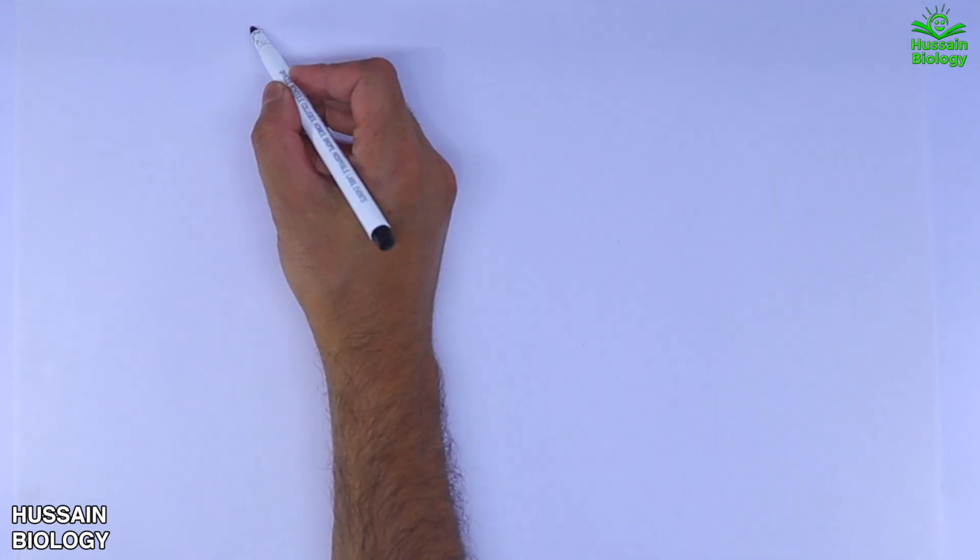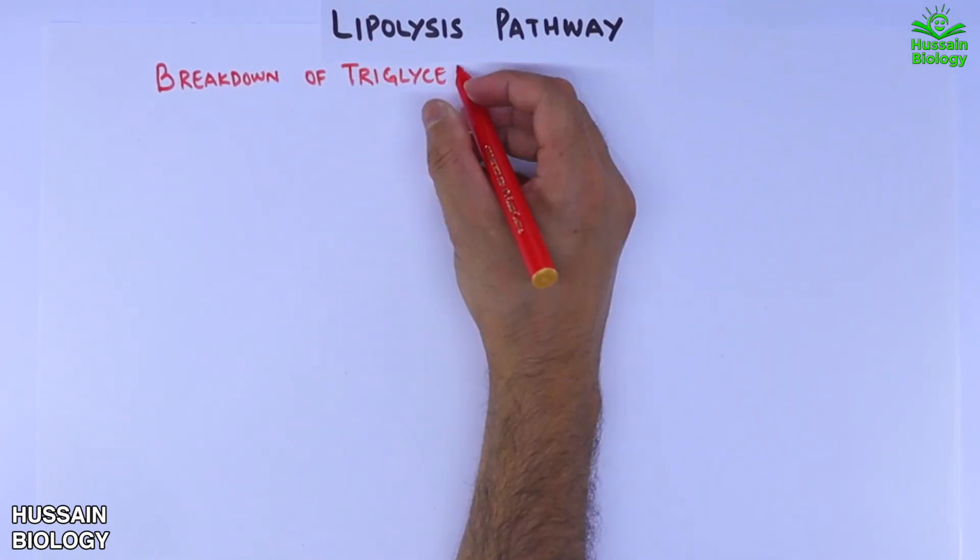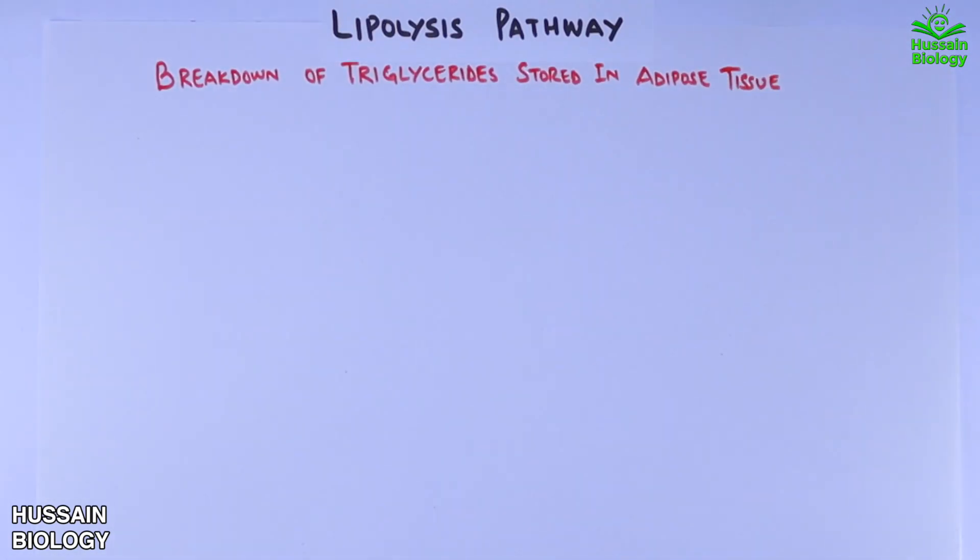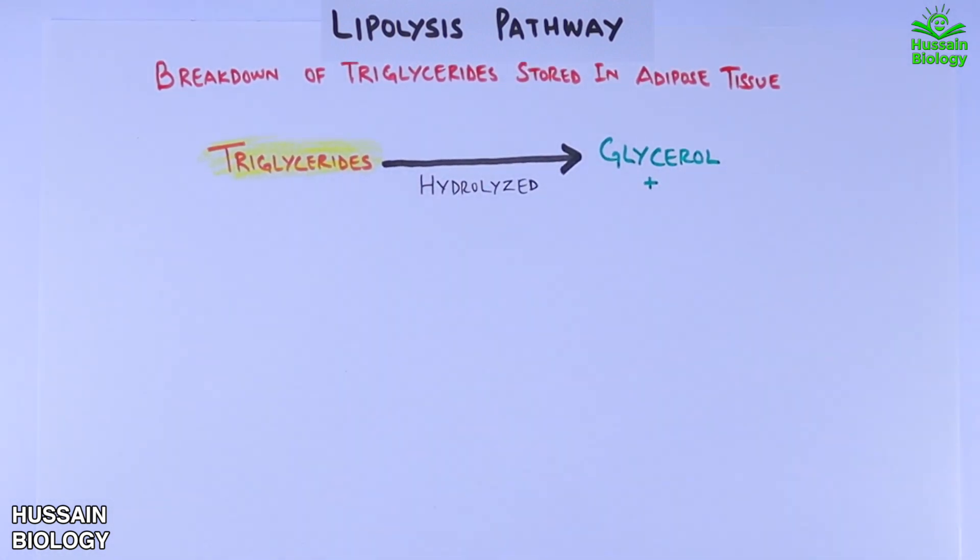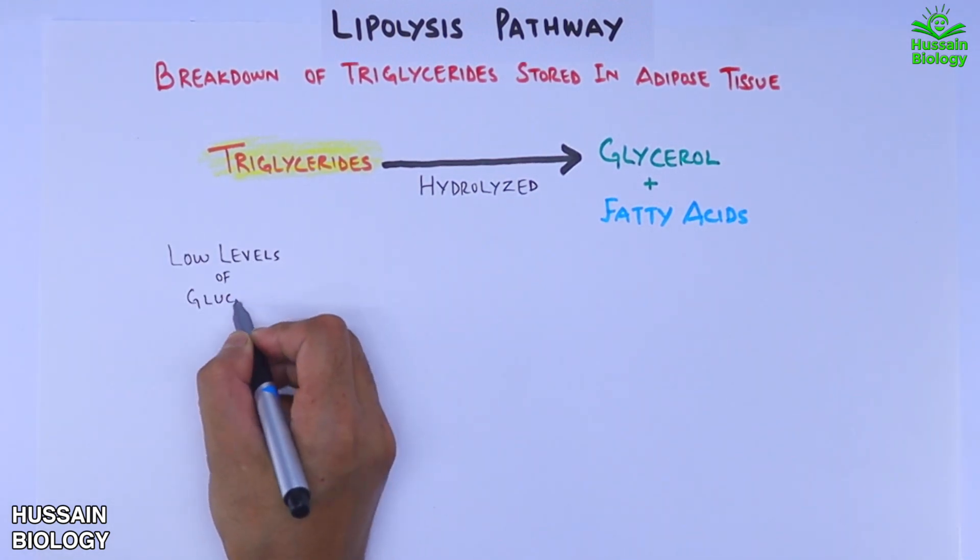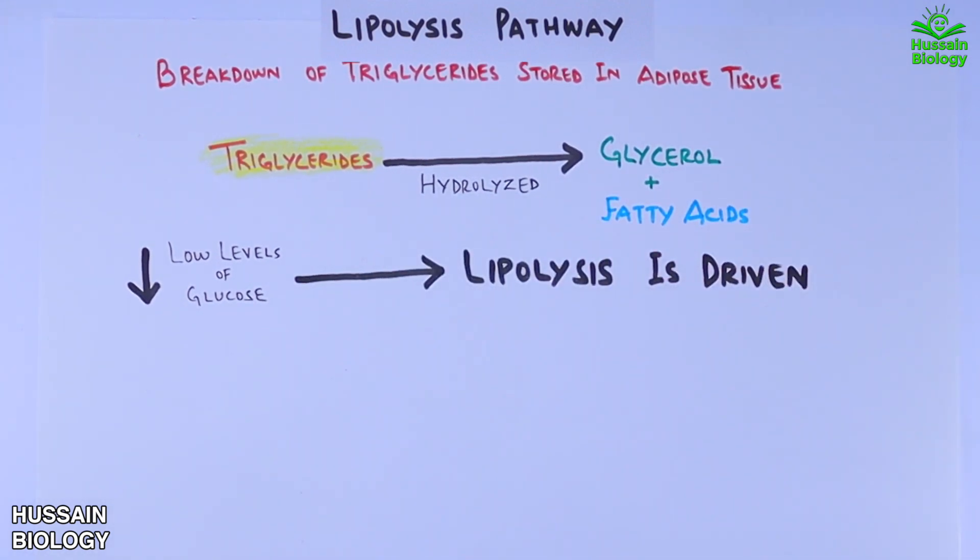In this video we will be discussing lipolysis, which in simple terms means the breakdown of triglycerides stored in the adipose tissue. Here we see triglycerides are hydrolyzed into glycerol and fatty acids. It must be noted that when we have low levels of glucose in our blood, lipolysis is driven, or when we have low levels of insulin.